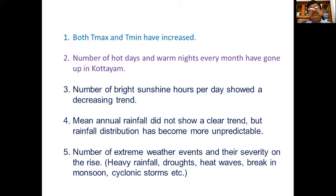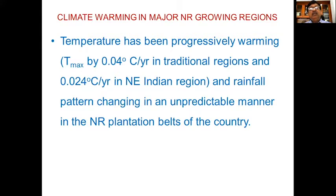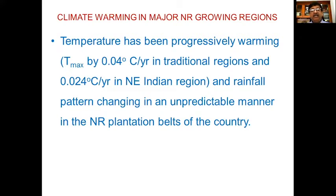Because of changes in temperature and rainfall patterns, we have been witnessing extreme weather events in recent years — both in frequency and severity — including heavy rainfall leading to floods, heat waves, droughts, unexpected breaks in monsoon, and cyclonic storms. Temperature has been progressively warming at 0.04 degrees Celsius per year in traditional regions and 0.024 degrees Celsius per year in northeastern India, while rainfall patterns have been changing unpredictably.